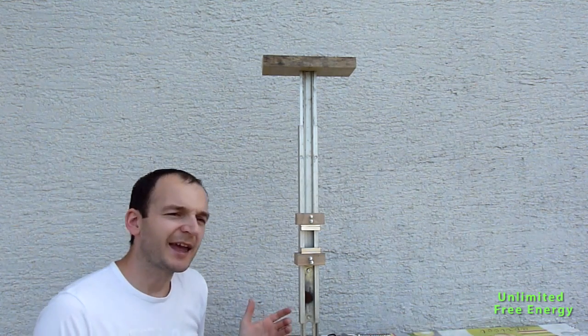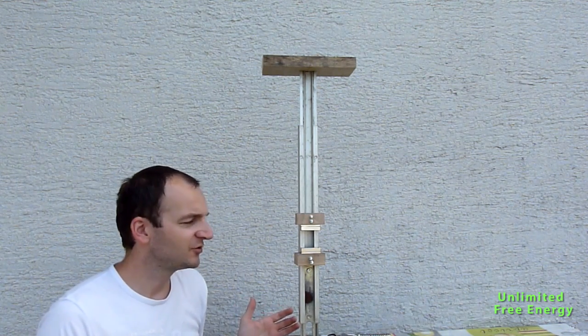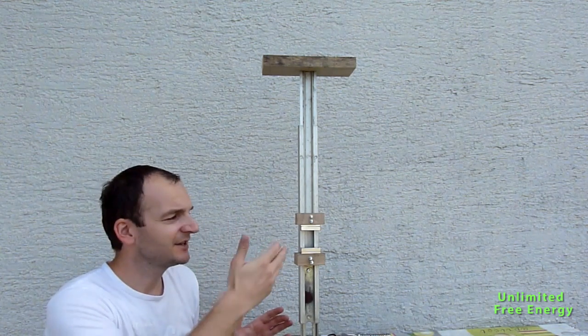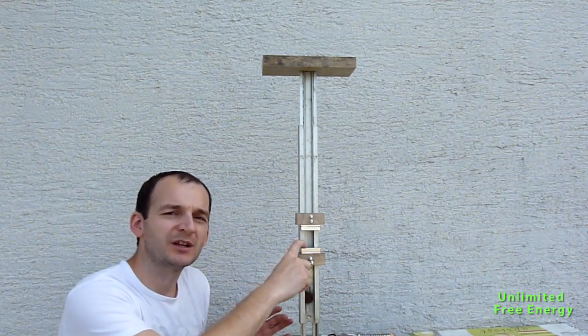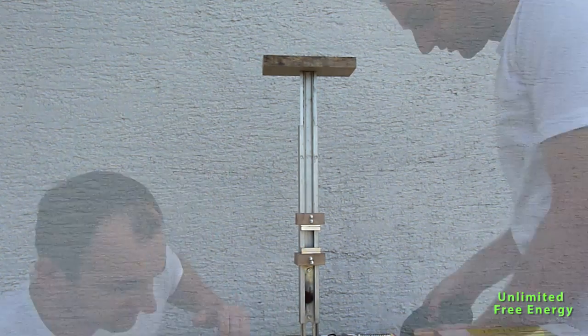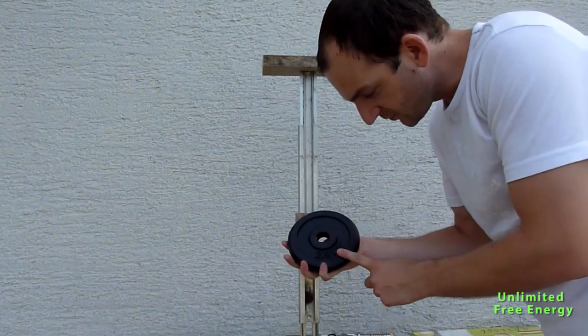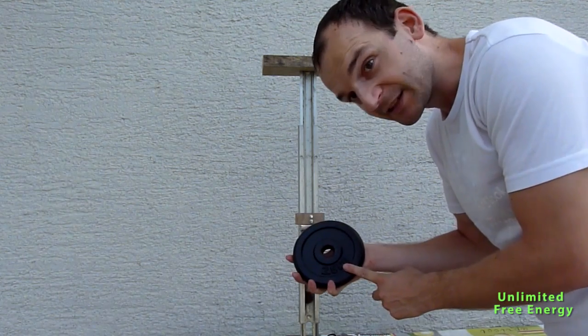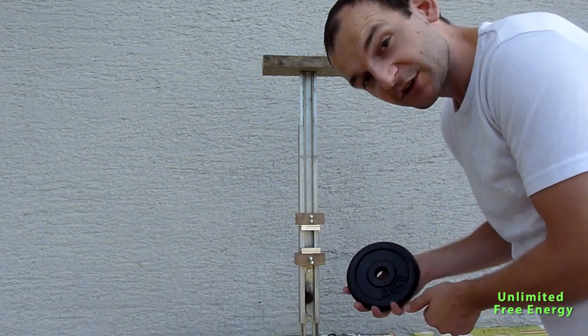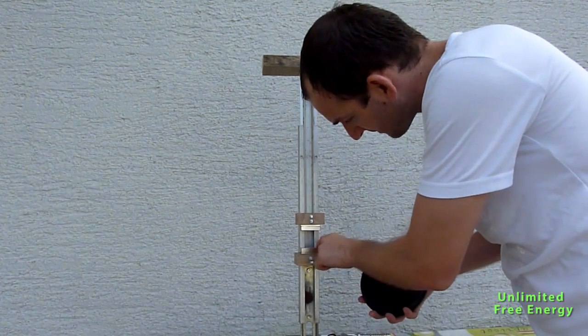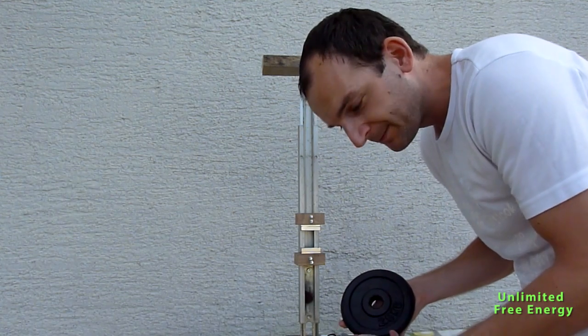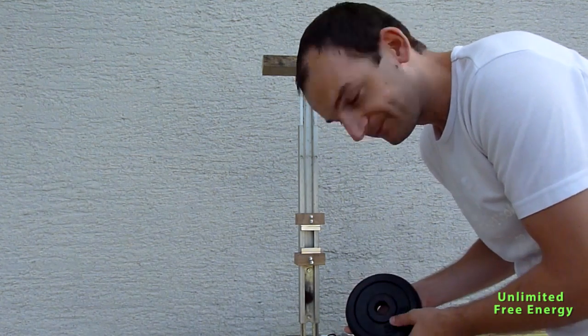What we can do is measure, try to put some weights there to see when these two magnets will come one to the other. I have here 2.5 kilogram weights. Let's try to put these weights and see how this will go closer to this bottom magnet. Magnets are positioned so they repel each other.